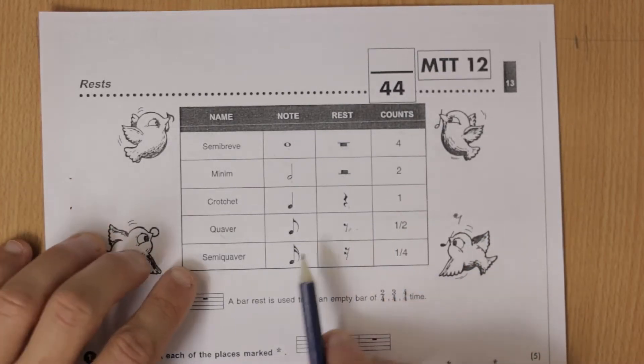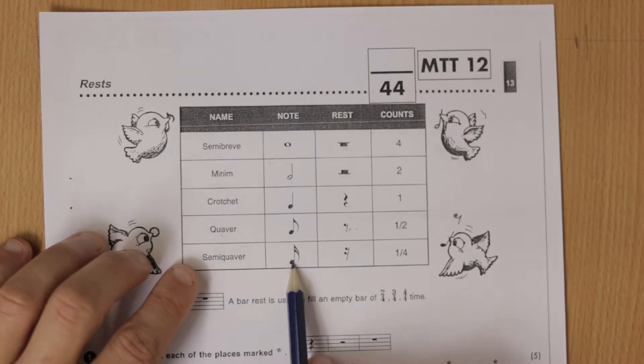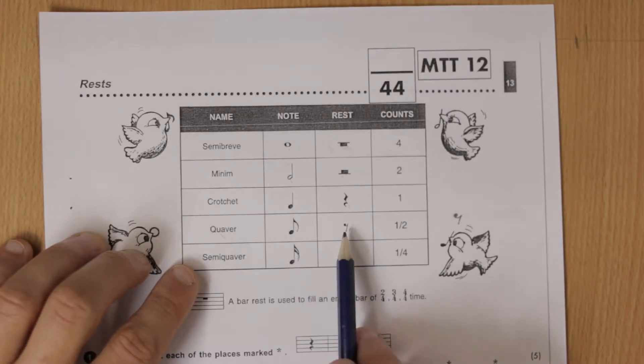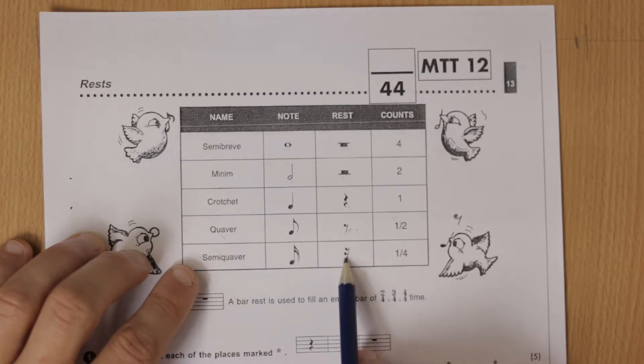So that's half a beat of silence. And then a semi-quaver has this like we learned about last week and it's got two beams. The semi-quaver rest is the same as the quaver rest only it's got two little bits there. Two flags we call those.